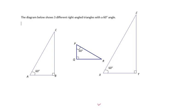By the end of this lesson you will be able to identify three trigonometric ratios: sine, cosine, and tangent. Everything I just said sounds very fancy but all it uses is similar triangles, which we talked about with their ratios.